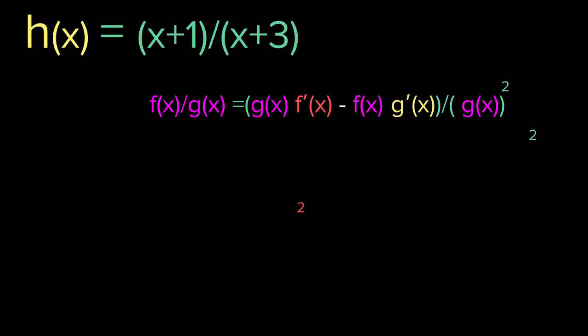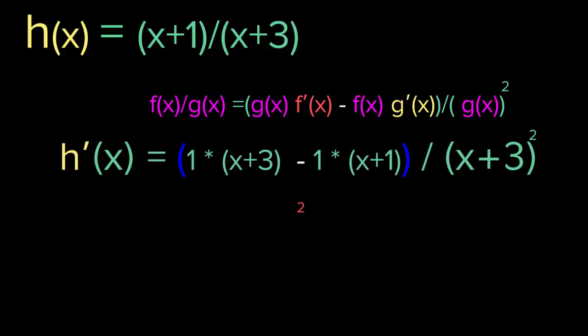The derivative of both the top and bottom functions is 1. So h prime of x equals 1 times x plus 3 — because the derivative of the top is 1 multiplied by the bottom which is x plus 3 — minus 1 times x plus 1, over x plus 3 squared. Simplifying: 1 times x plus 3 is just x plus 3, and 1 times x plus 1 is just x plus 1. So we get x plus 3 minus x minus 1.